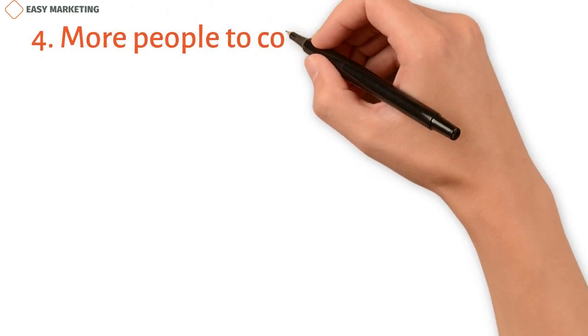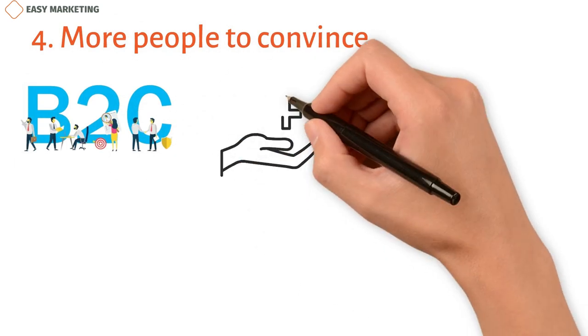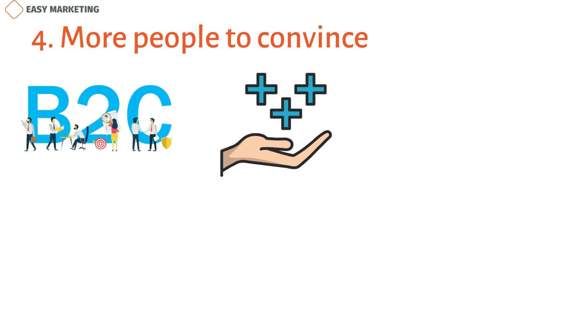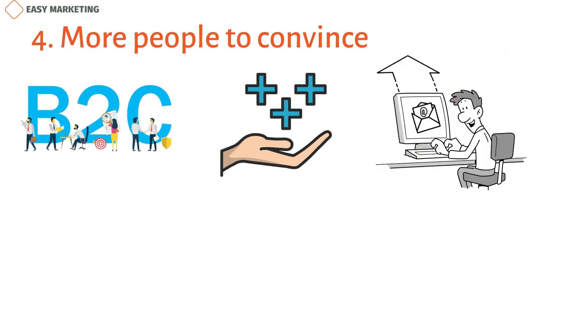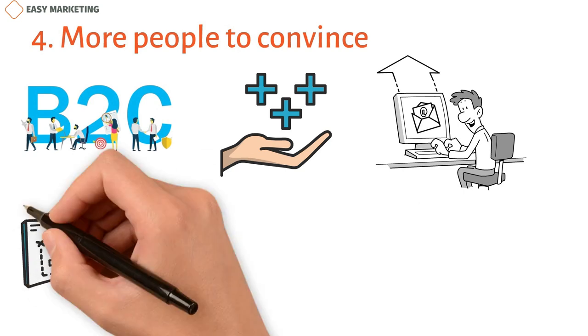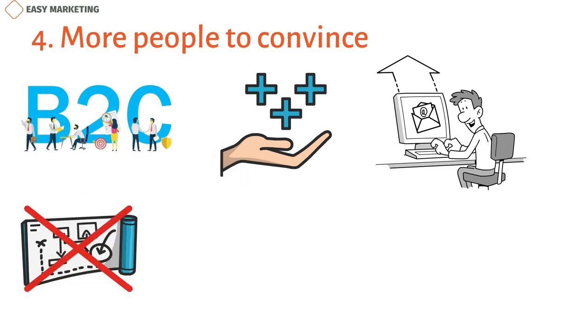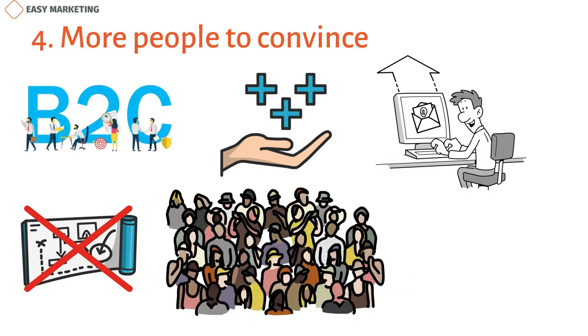More people to convince: B2C marketing can use tried and true methods like taking advantage of micro moments to reach customers at the right time to encourage them to buy. Creating a feeling of urgency to get people to buy on the spot or sending cart abandonment emails are tried and true B2C marketing strategies that may not work for manufacturer marketing. When marketing to other businesses, many of these strategies don't work as well or at all because there are so many more people to impress.